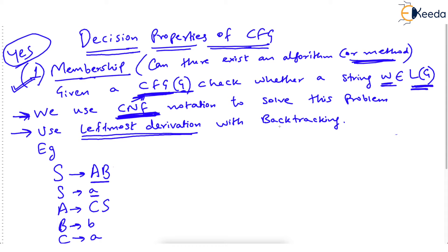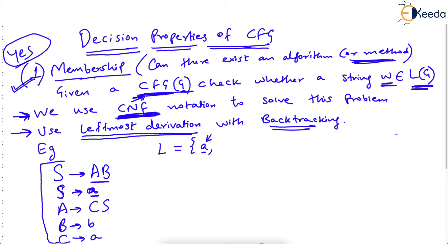We will use this CNF notation instead of pure CFG. The second point is we will use leftmost derivation with backtracking. Let's see what backtracking means with an example. We are given a grammar — the smallest string in the language of this grammar will be small 'a', because the start symbol can directly generate 'a'. Now, do you have any algorithm to prove that small 'a' is a member of the language? This is the membership problem. If such an algorithm exists, we say the membership problem is solvable.